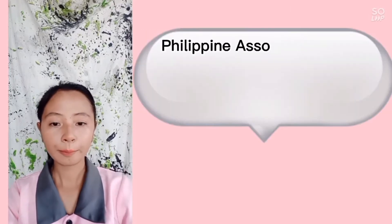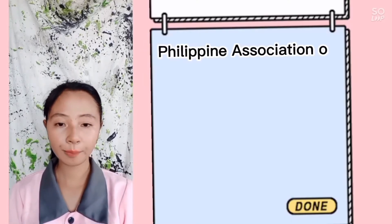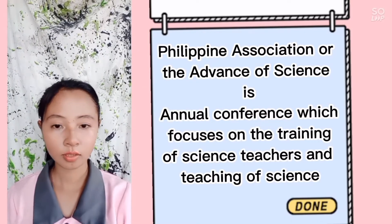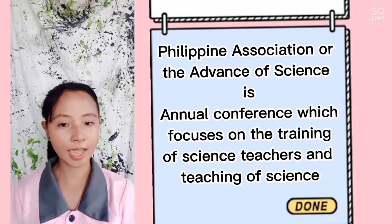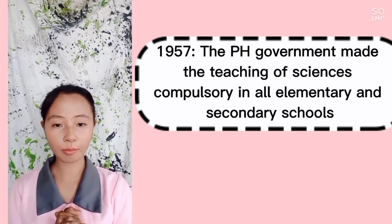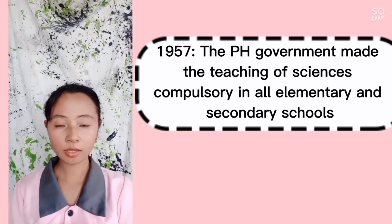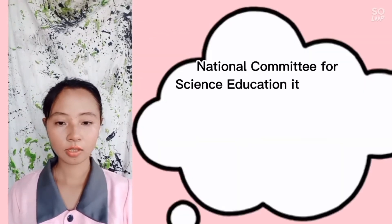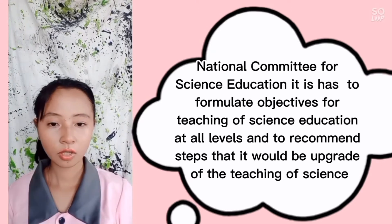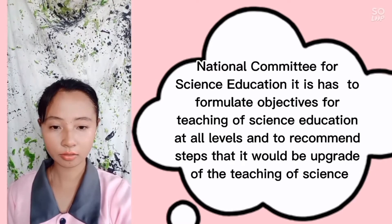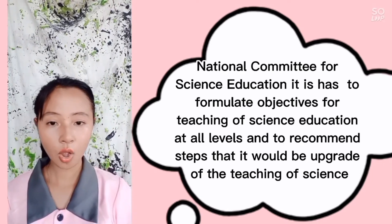Early efforts included the Philippine Association for the Advancement of Science and the National Committee for Science Education. The Philippine Association for the Advancement of Science held an annual conference focused on training science teachers in the teaching of science. In 1957, the Philippine government made the teaching of sciences compulsory in all elementary and secondary schools. The National Committee for Science Education formulated objectives for teaching science at all levels and recommended steps to upgrade the teaching of science.